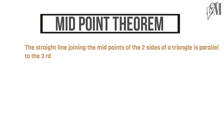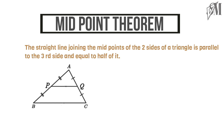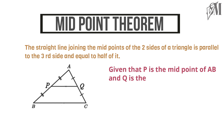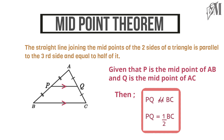the third side and equal to half of it. That is, in triangle ABC, P is the midpoint of AB and Q is the midpoint of AC. Then according to the midpoint theorem, PQ is parallel to BC and PQ is equal to half of BC.